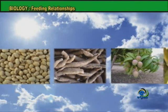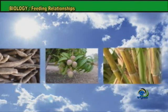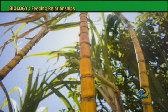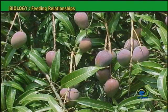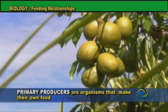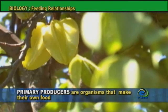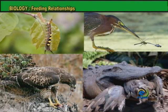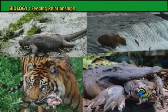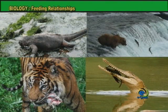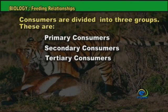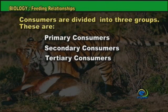These foods have the sun's energy trapped in them in the form of chemical energy. Because plants make their own food, they are called primary producers. Primary producers are organisms that make their own food. All communities need to eat producers to get energy. Living things that eat other living things for food are called consumers. Consumers do not make their own food, but get their food from a variety of sources. Consumers are divided into three groups: primary consumers, secondary consumers, and tertiary consumers.